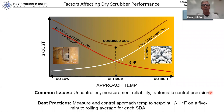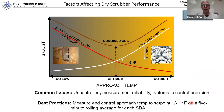If we put in an approach temperature setpoint of 40 degrees, we want to maintain 40 plus or minus one degree on a five-minute rolling average basis.